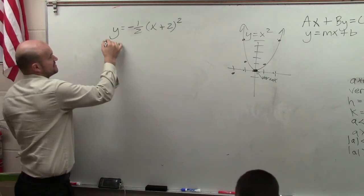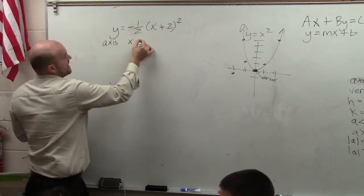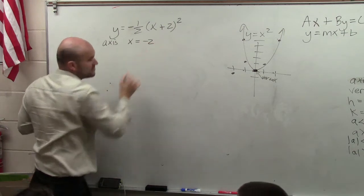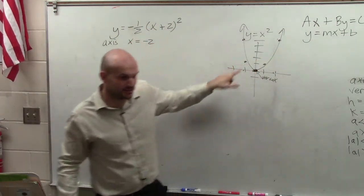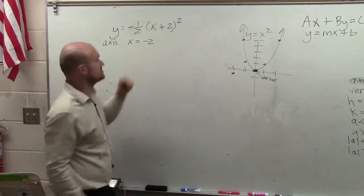So the first thing we want to do is identify the axis, which x equals now negative 2, right? Remember opposite that we talked about this. Opposite of h is h. So these are going to be opposite values.